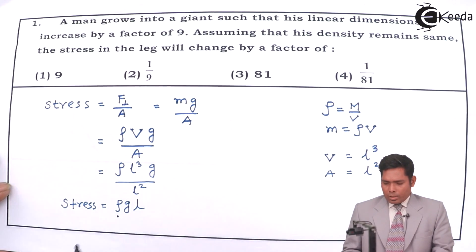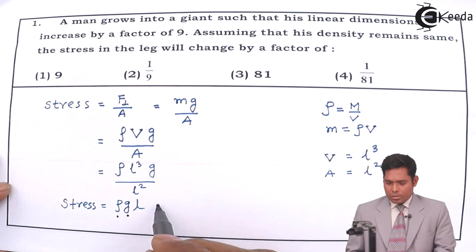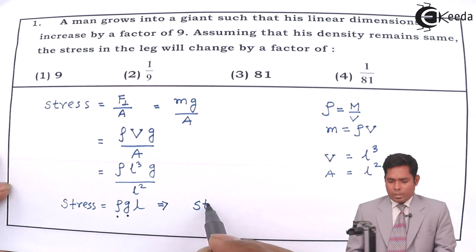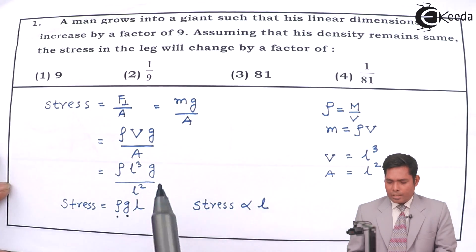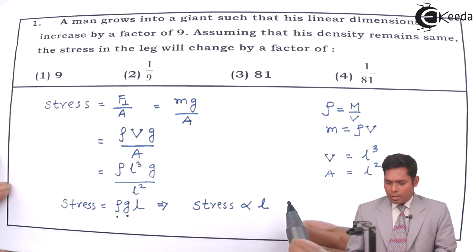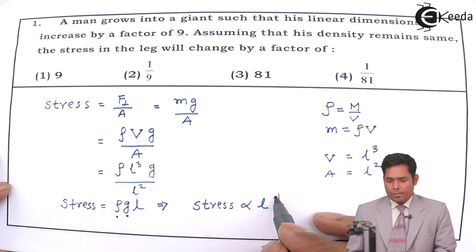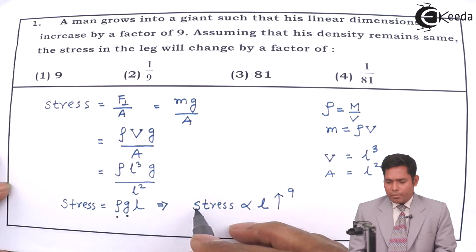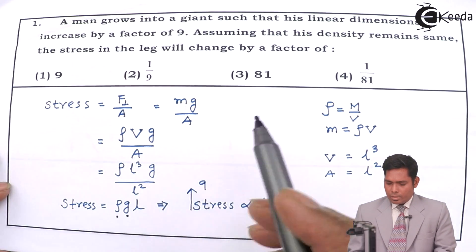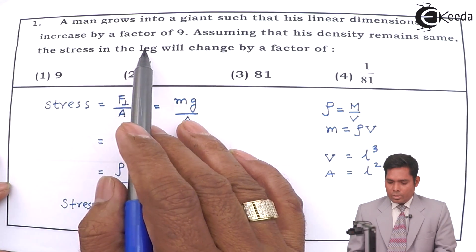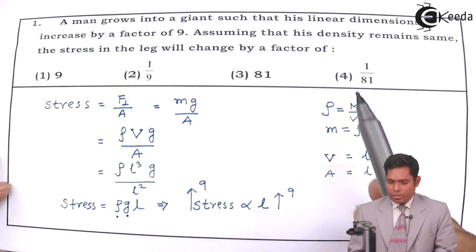You can see that this density here remains same, so this is a constant. This is also a constant. This implies stress is directly proportional to the linear dimension length L. So, as this increases by a factor of 9, the stress will also increase by a factor of 9.